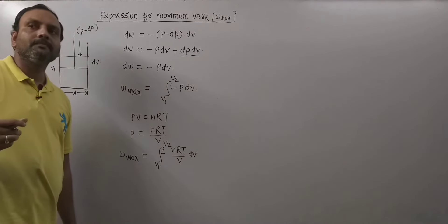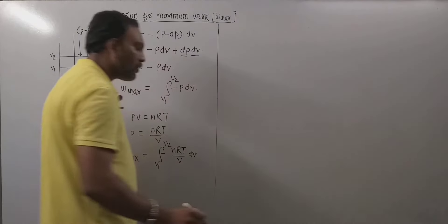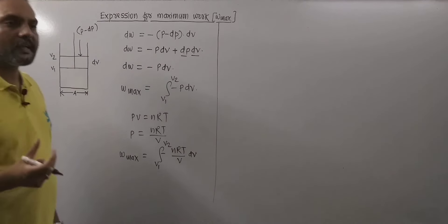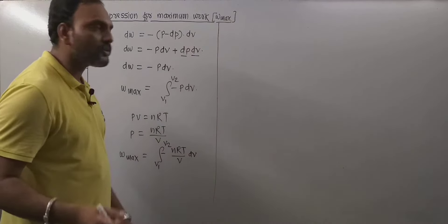Now n, the number of moles of gas, R, the universal gas constant, and T, the temperature—we are dealing with isothermal process—so nRT are constants.